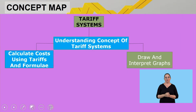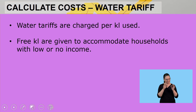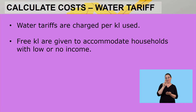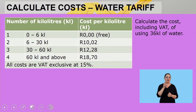The next concept we are looking at is calculating using the tariffs given as well as the formula. When we calculate a water tariff, the units will be in kilolitres. In most cases the first six kilolitres are free — the government gives the first six kilolitres to accommodate households with low or no income, because water is a basic need.